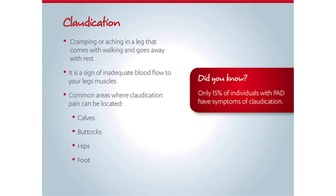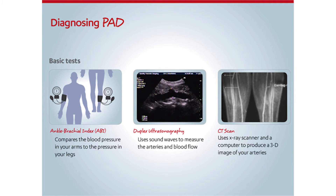Only about 15% of people with PAD experience symptoms of claudication. Peripheral arterial disease may be diagnosed with some basic tests. One is the ankle brachial index. The blood pressure in your arms and the blood pressure in your legs should be close to the same. If they are not, it may mean there is a blockage somewhere. Duplex ultrasonography and CT scans use imaging techniques to allow the blockages to be seen.